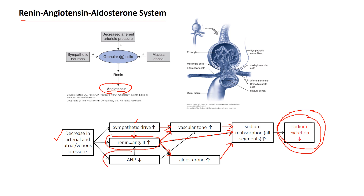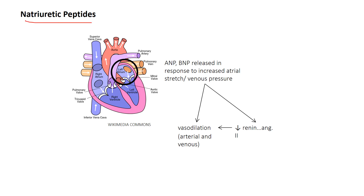There's also a new thing in this picture: ANP, which stands for atrial natriuretic peptide — another hormone. Natriuretic peptides, including brain natriuretic peptide, are released from a few places in the body. One important place is the atria — they're released in response to increased stretch, so they sort of sense venous pressure and venous volume. The feedback loop here is that an increase in venous pressure or volume leads to production of natriuretic peptides, which act directly on vessels to cause vasodilation and inhibit the renin-angiotensin system.